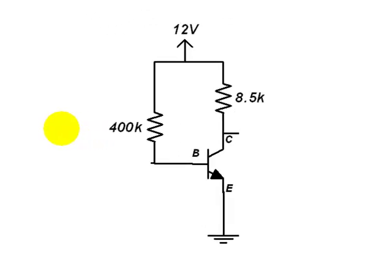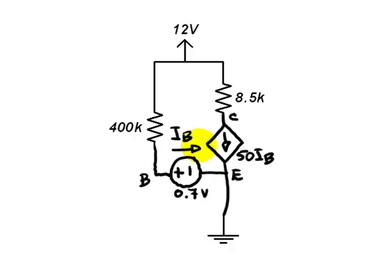As with the first example, we assume the transistor is in its linear mode to begin with, and we replace it with its linear model. It is an NPN. I have identified the base, the emitter, and the collector.